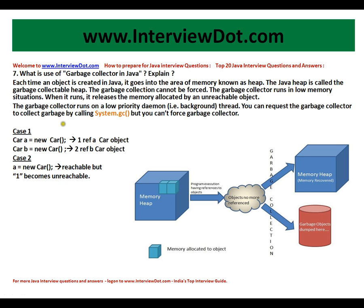We are not sure how to reach the previous object; we don't have any idea how to reach it, because for A we have assigned a new object. In this case, the JVM takes care of managing the memory in an efficient way. In C++, the developer has to take care of cleaning all these objects, but in Java it is taken care of by the JVM automatically. This is one of the advantages of using Java.